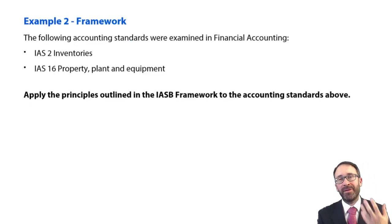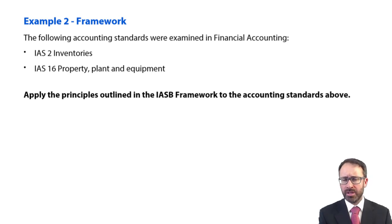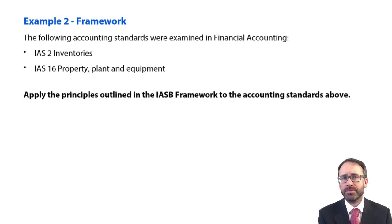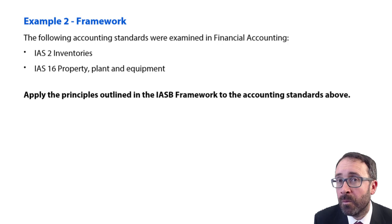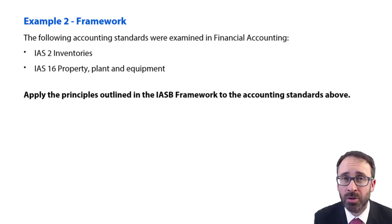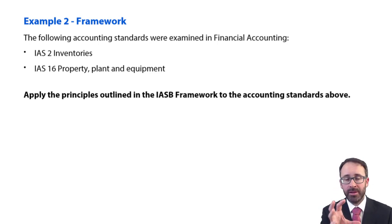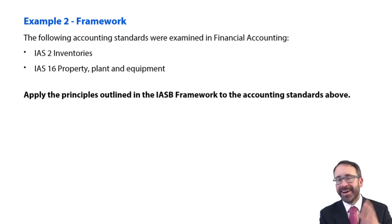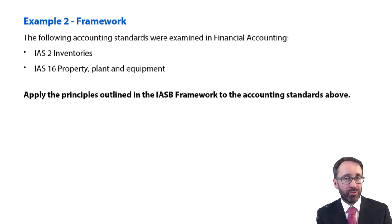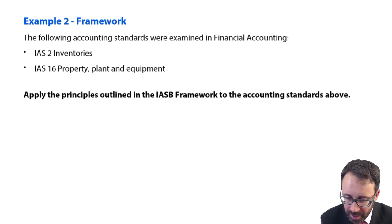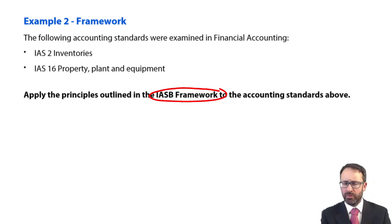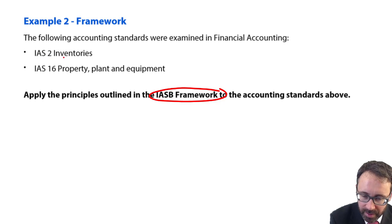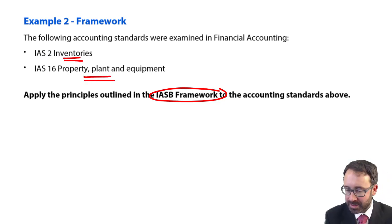Example two is a little bit more of an application with some written elements. We've got two standards from financial accounting: IAS 2 Inventories and property, plant and equipment. Inventory is measured at the lower of cost and NRV. With PPE, we capitalise it, depreciate it, may revalue it, and may dispose of it. What we need to do is apply the principles within the IASB conceptual framework to these accounting standards.